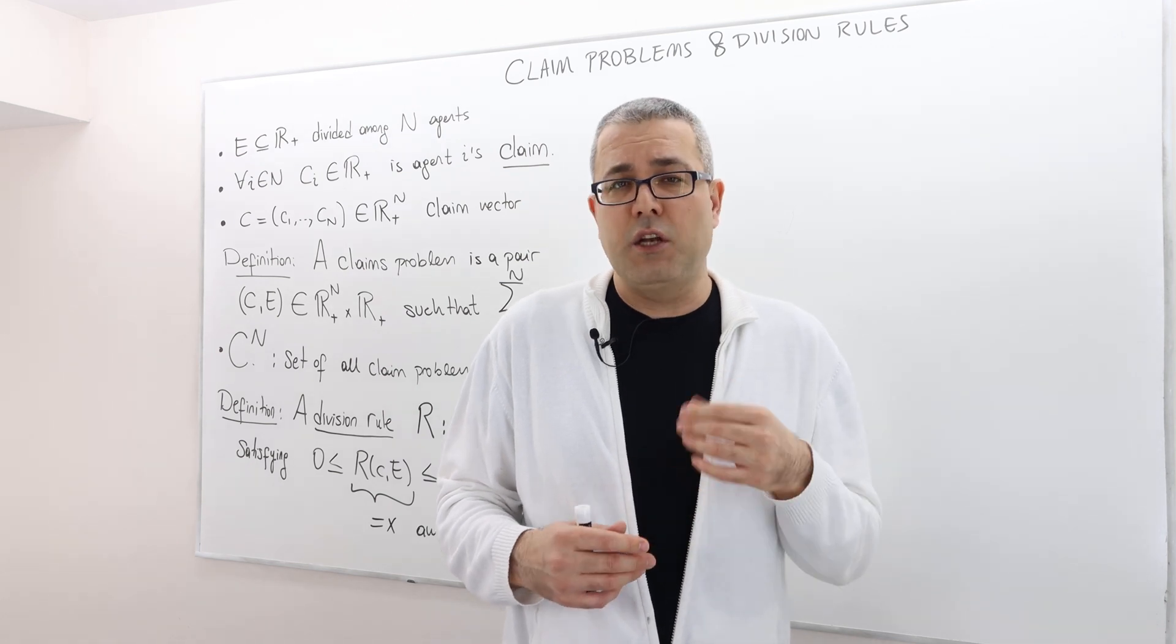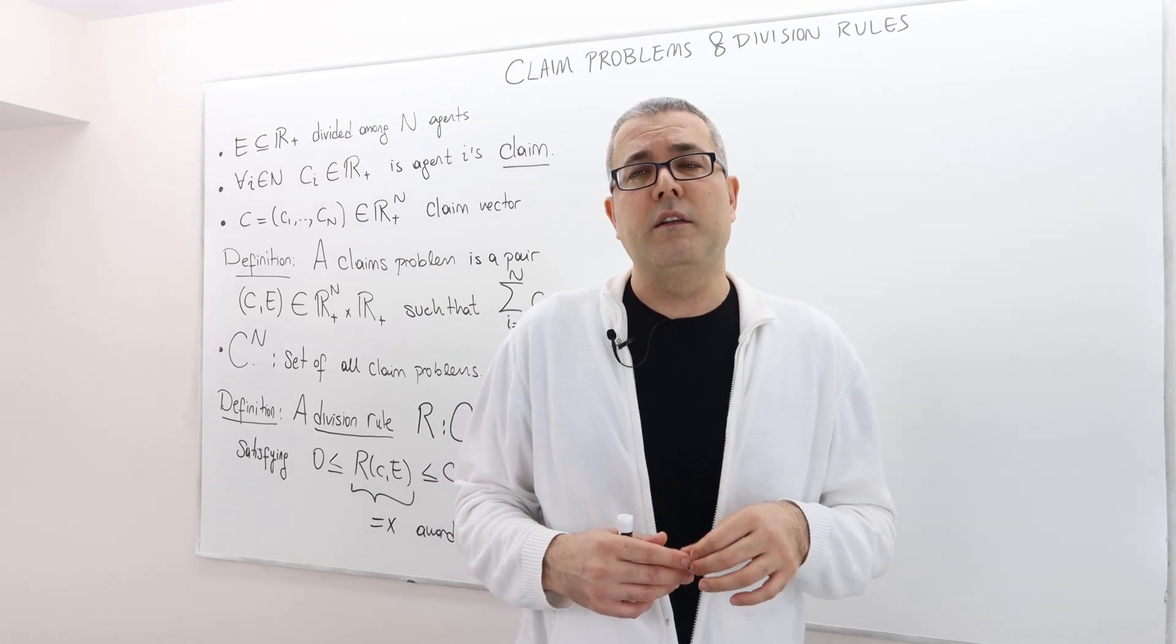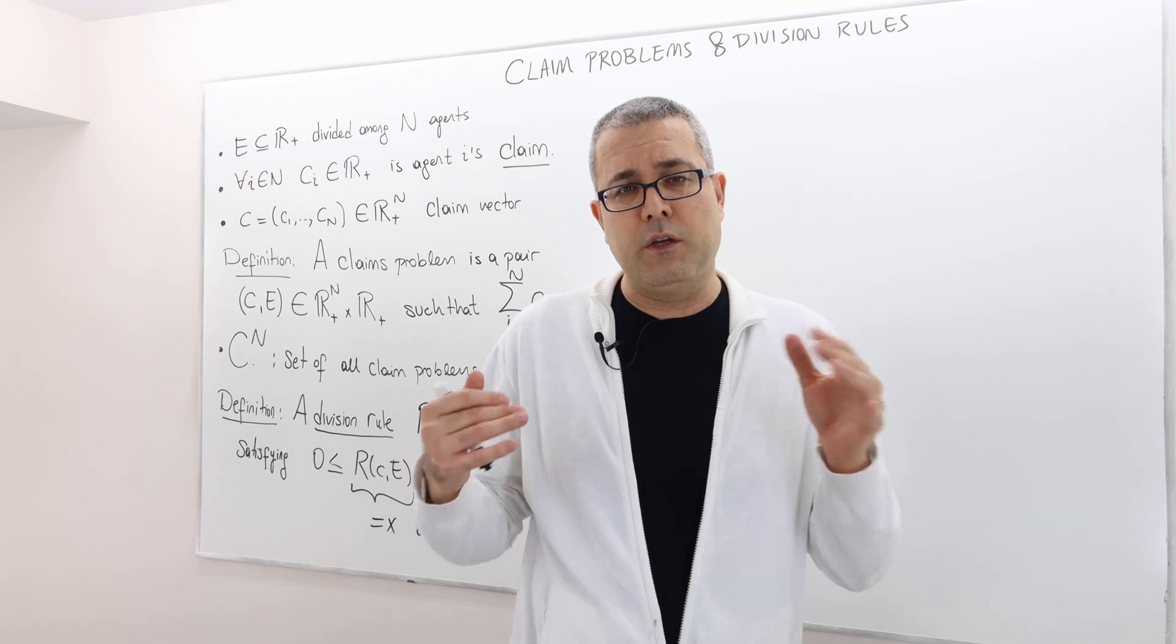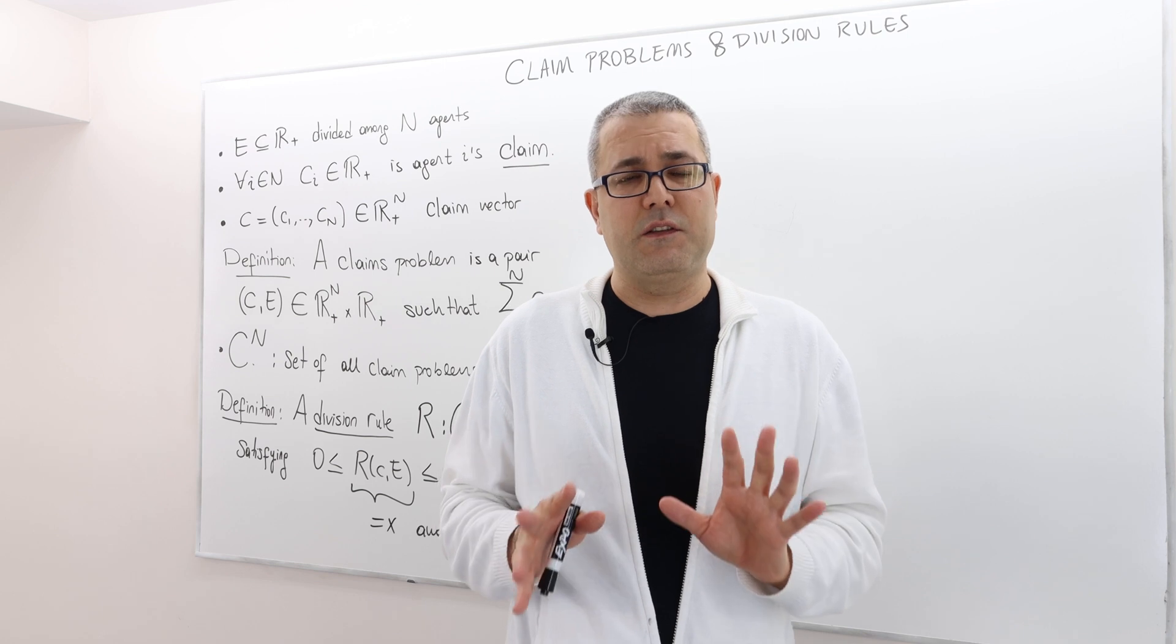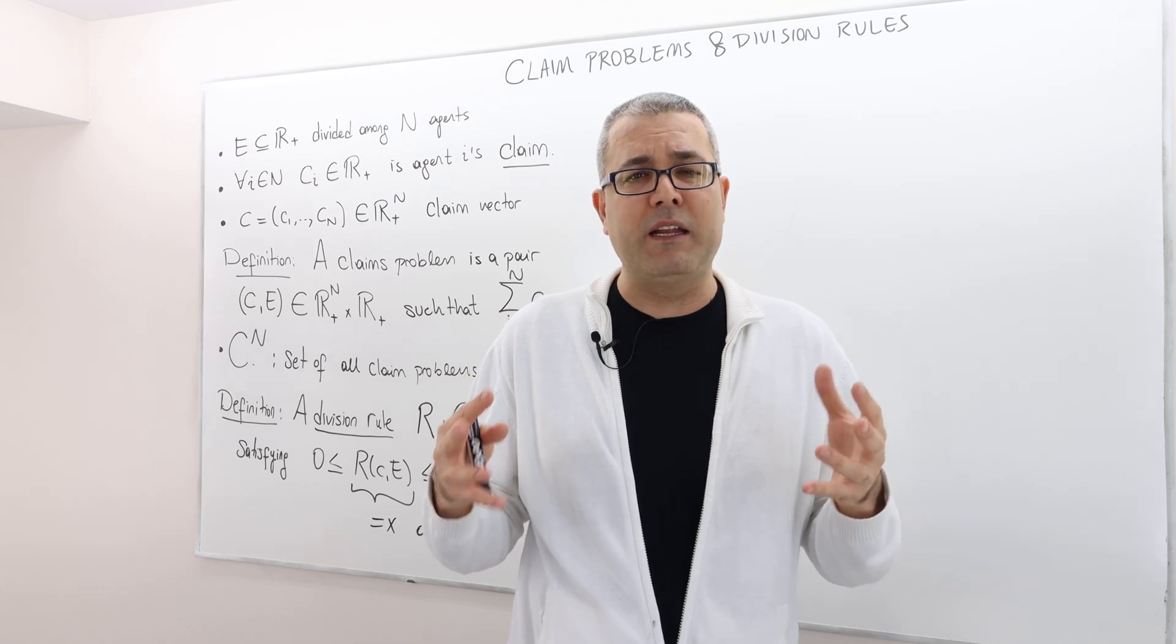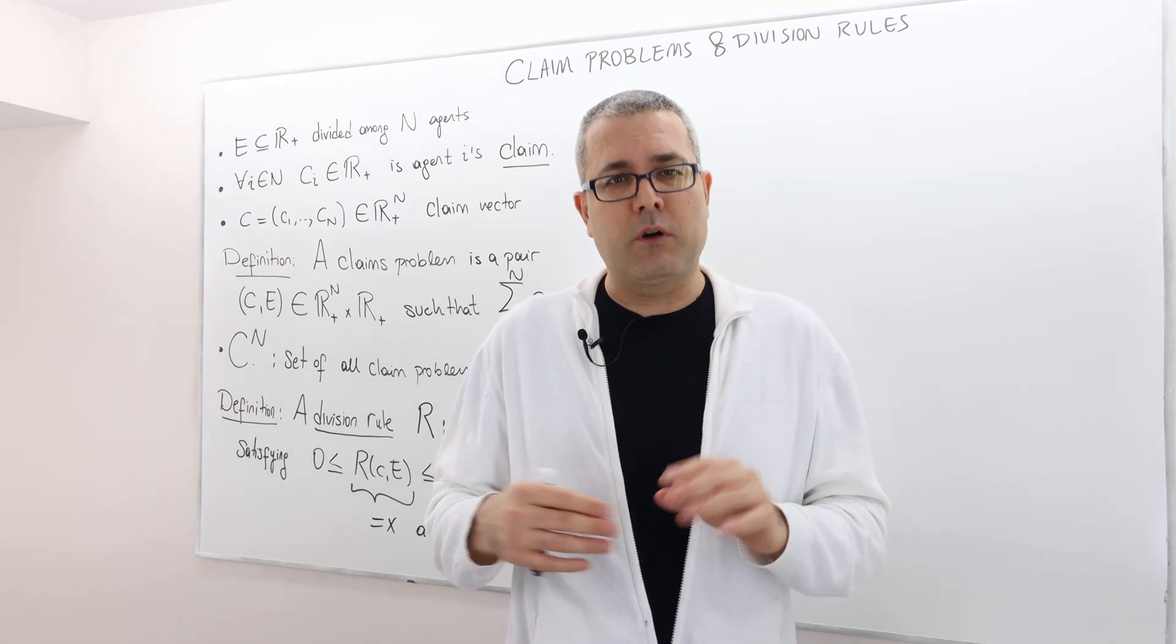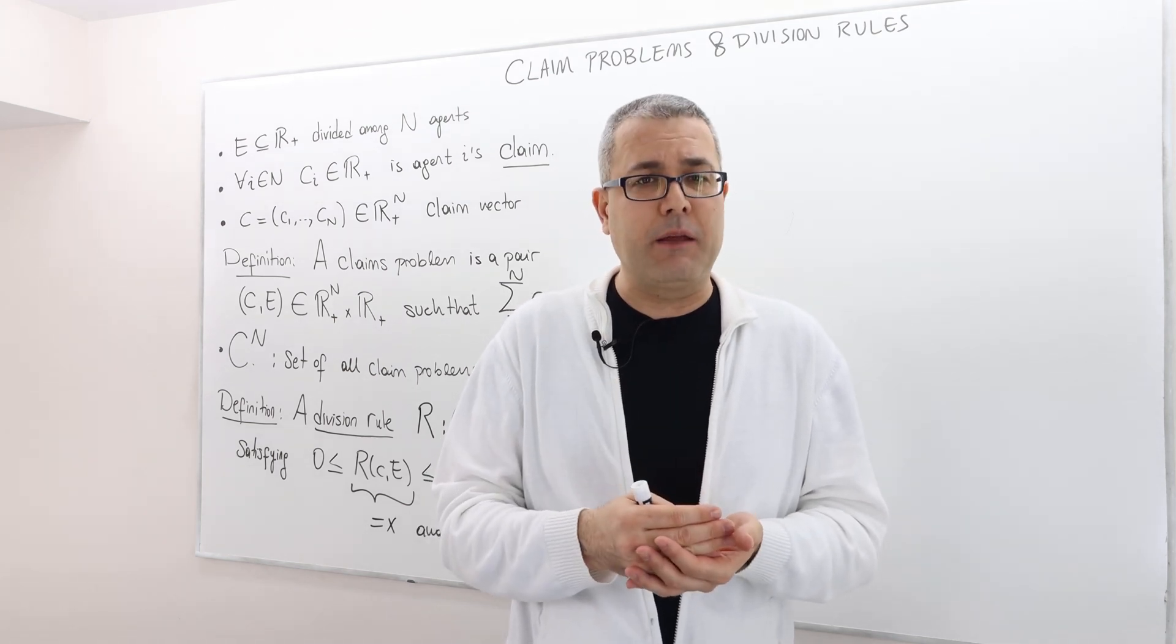In reality, in many situations, the claims are just words that you probably cannot prove in the court, and there might be some strategic reasoning behind how much to claim. And so what we're going to do in all our analysis is to ignore all that. What does that mean? That means, let's suppose my claim is my honest, the amount of money that I honestly think I'm supposed to pay. There's no strategic thinking. Or consider problems where I can prove that that's my claim.